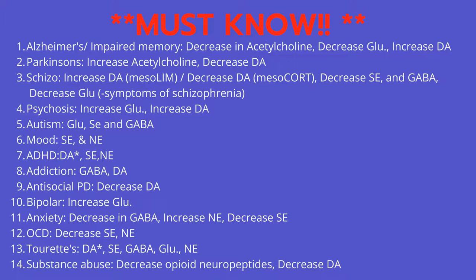Number four: Psychosis — increased glutamate and increased dopamine. Number five: Autism — impaired neurotransmission involving glutamate, serotonin, and GABA.